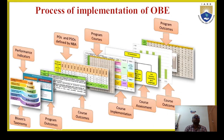This picture gives you the process in which the implementation of OBE takes place. We use Bloom's taxonomy and define the course outcomes, then map the program outcomes with the course outcomes. We also map the course outcomes with the program-specific outcomes. There are many courses in a program, so this is done for all programs. Then the implementation of the courses is done, followed by assessment of the course outcomes and program outcomes, and then the cycle continues.